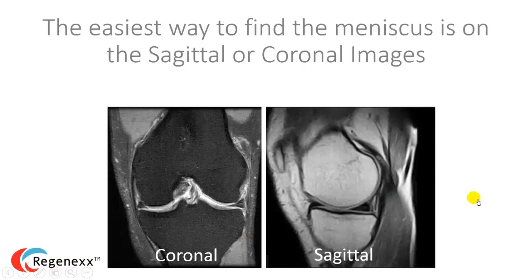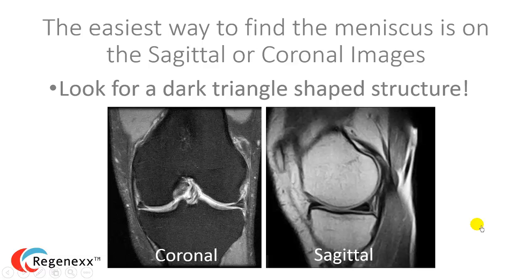The easiest way to find the meniscus is on the sagittal or coronal images. Look for a dark triangle-shaped structure. You can see these triangle-shaped structures here, and on the coronal or sagittal, the meniscus will always look like a triangle — at least the normal meniscus. I'm going to highlight those triangles right here.